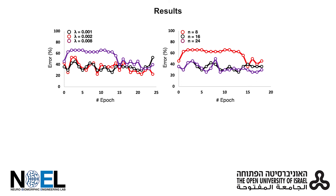Our results demonstrate that while an 8-neuron reservoir underperforms the higher 60-neuron reservoir, classification performance remains roughly the same when the reservoir size is further increased to 24 neurons, suggesting a sweet point for a given task complexity.